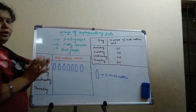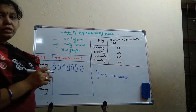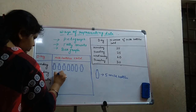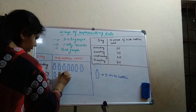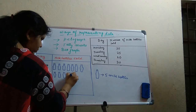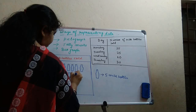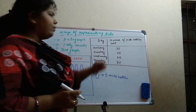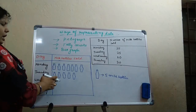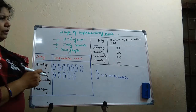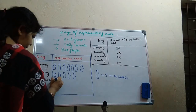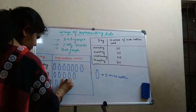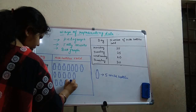Now let us move to Tuesday in the same way. For Tuesday the number is 25. 25 divided by 5 — how much is it? 5. So we have to draw 5 milk bottles here. Now we move to Wednesday. Wednesday we have the number of milk bottles 20. Tell me, how many pictures I have to draw here. 20 divided by 5 is 4. So we have to draw 4 here.